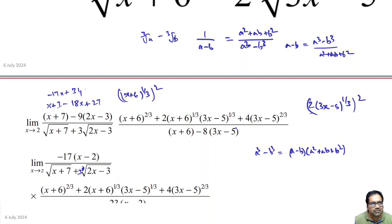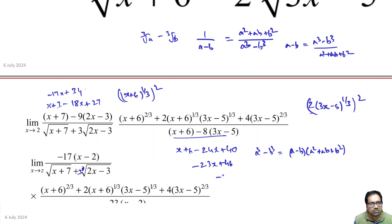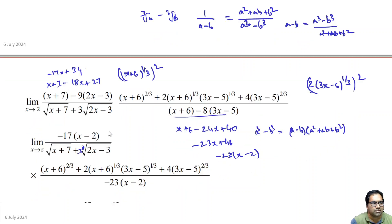For the denominator's cube root part, we simplify: (x+6) minus 8·(3x-5) equals x+6 minus 24x+40, which is -23x+46, which factors as -23·(x-2). That is the simplified denominator part.